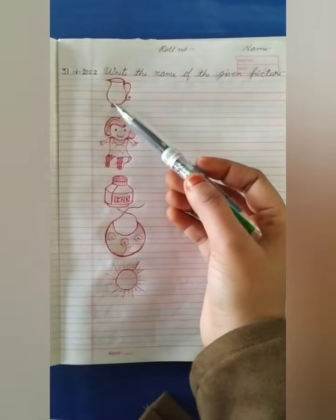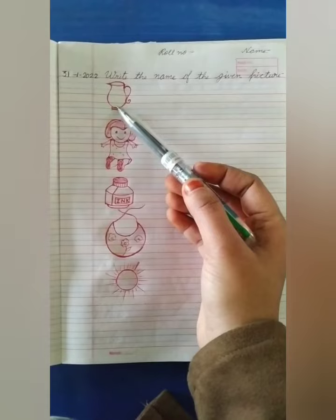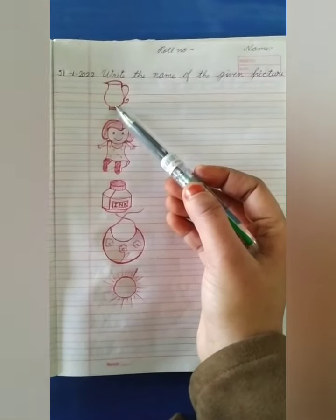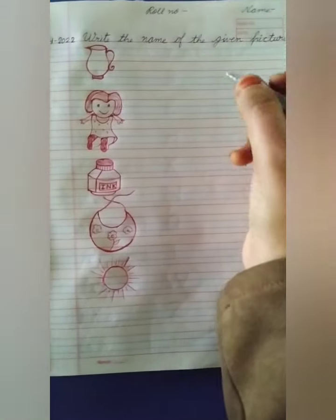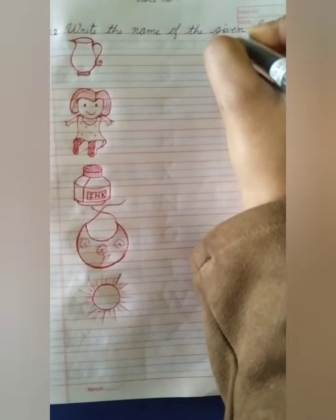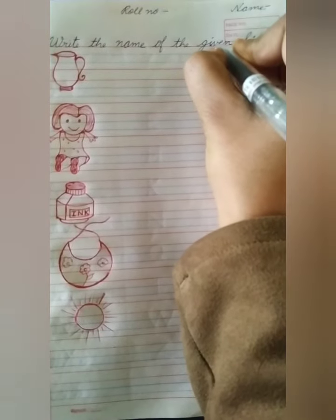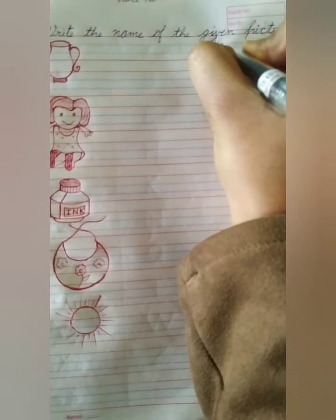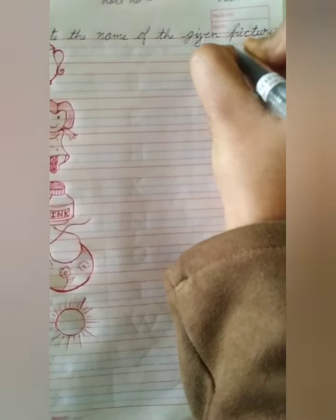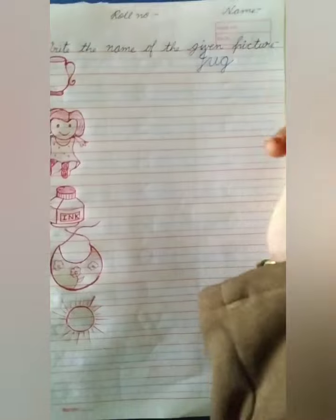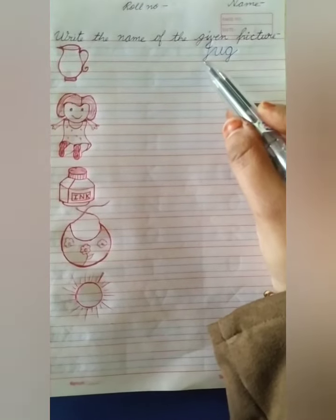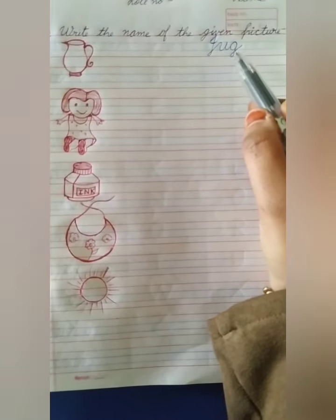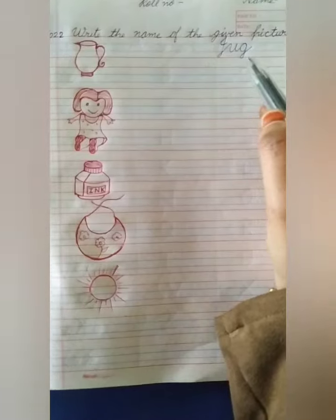Tell me, what is this? Very good, this is a jug. So, write here jug. What is the spelling of jug? First letter should be capital J. J-U-G, Jug. Look, first letter should be capital and rest of all will be small. J-U-G, Jug.